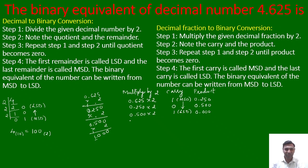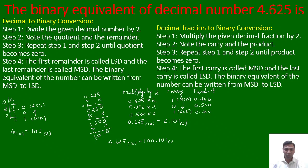So the fractional part 0.625 base 10 is equal to 0.101 base 2. Now combining both parts, 4.625 base 10 is equal to 100.101 base 2.